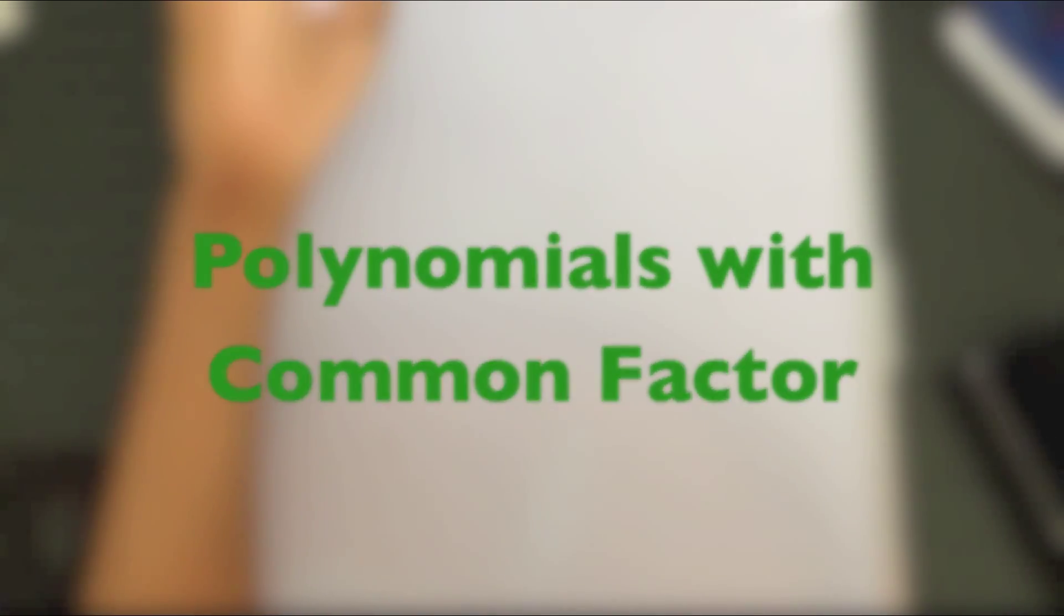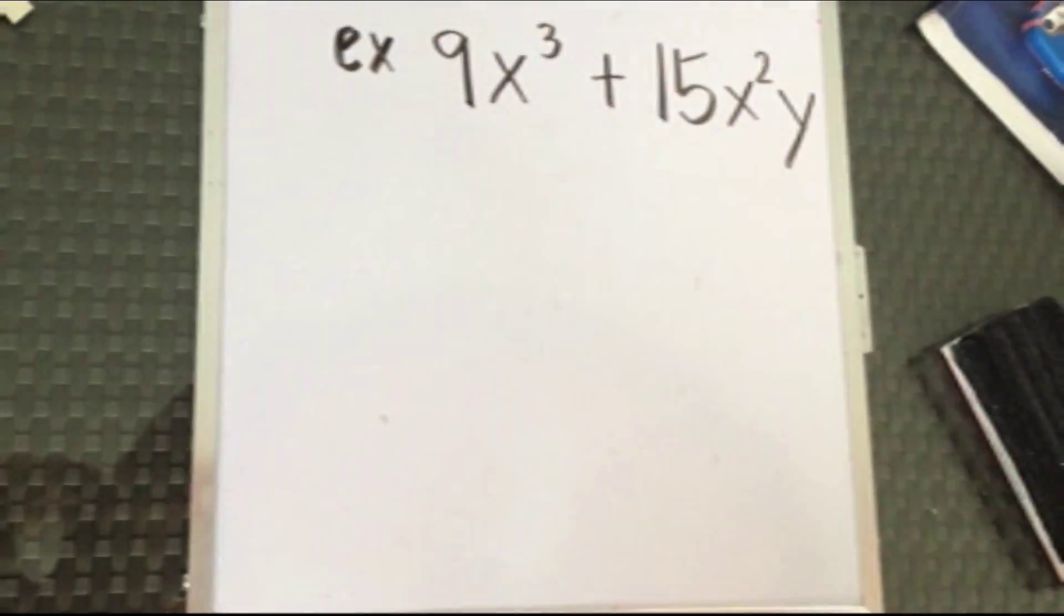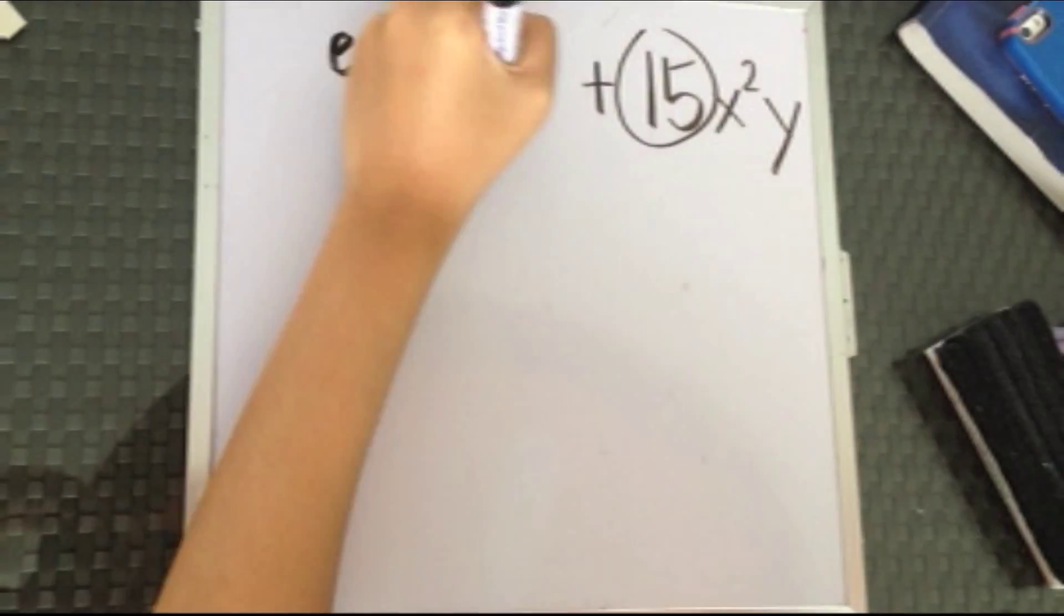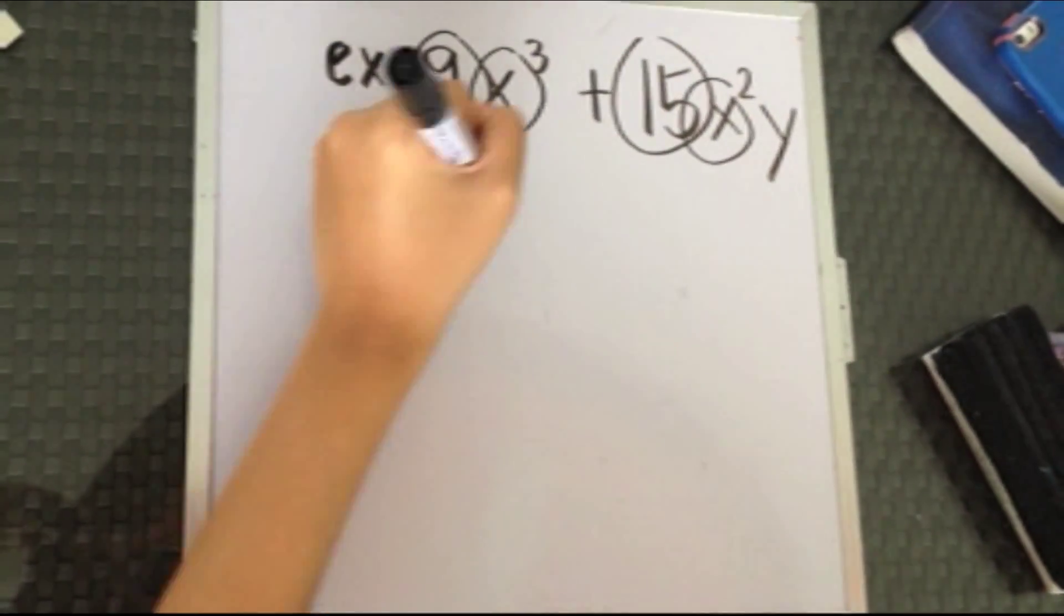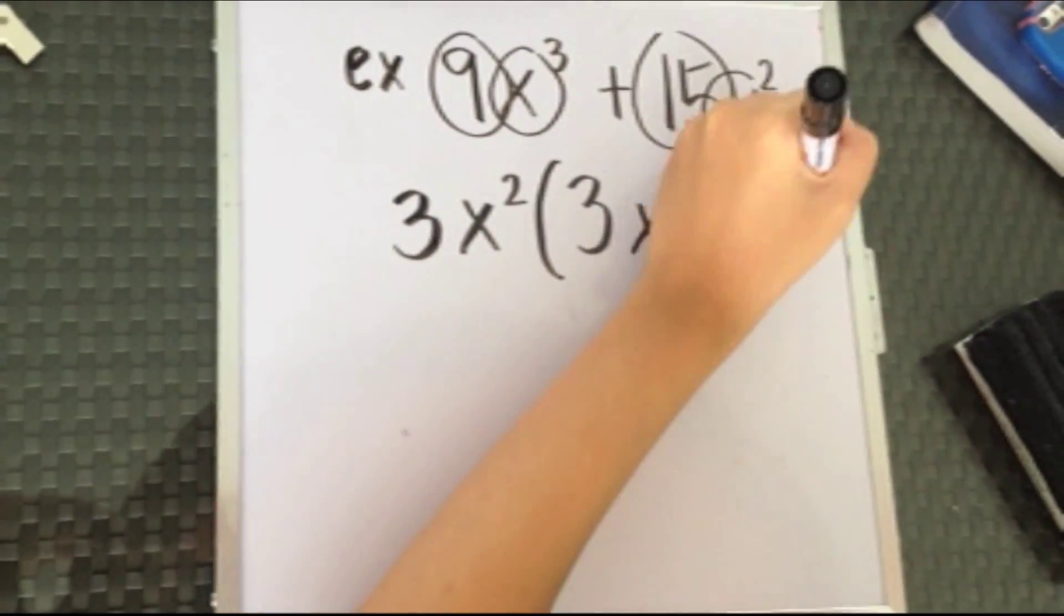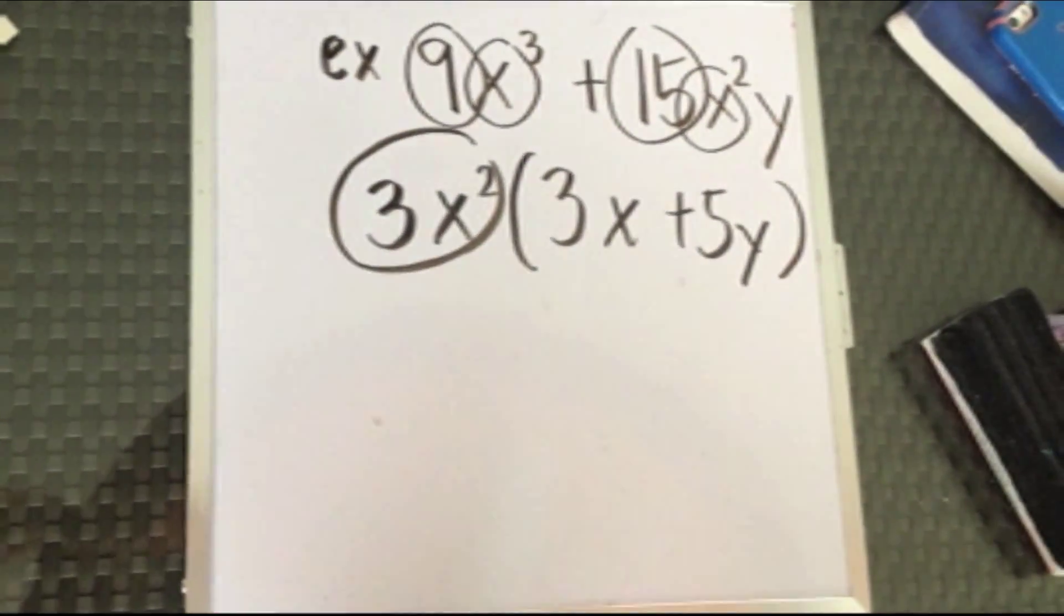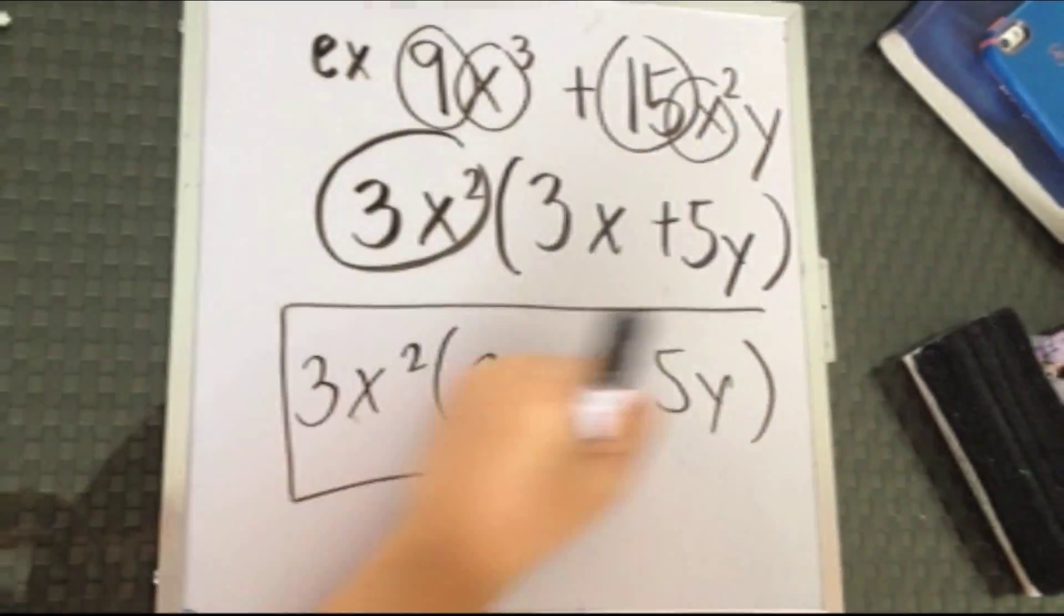Polynomials with a common factor. Get the GCF of 9x cubed and 15x squared. 3x squared is the GCF. This is your final answer.